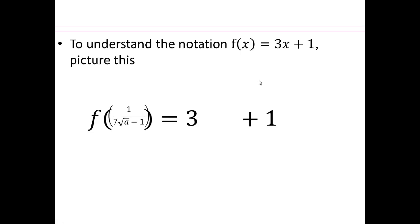So if you put in this, what would happen? Why don't you pause the video and tell me what the output will be? Go ahead. Assuming you've paused and come back, you just replace the x with 1 over 7 square root a minus 1. So it doesn't really matter what is here. Whatever is here is going to go take place of x. Just remember that.